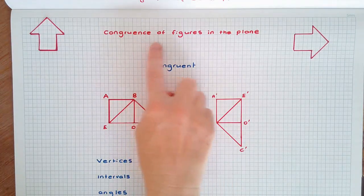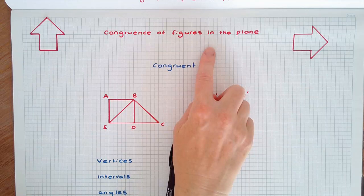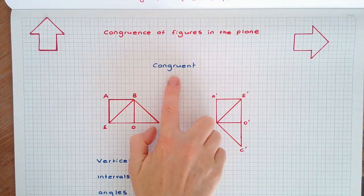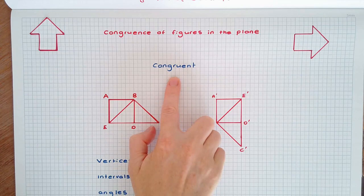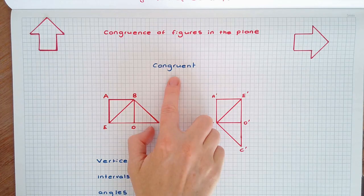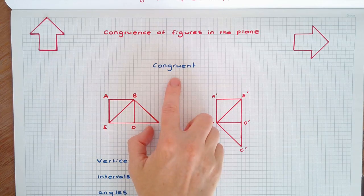In this video we are going to have a look at congruence of figures in the plane. Two plane figures are called congruent if one figure can be moved on top of the other by a sequence of translations, rotations and reflections so that they coincide exactly. Congruent figures have the same size and shape.